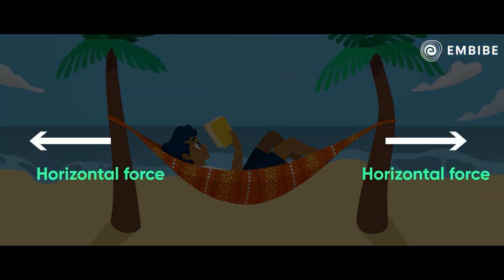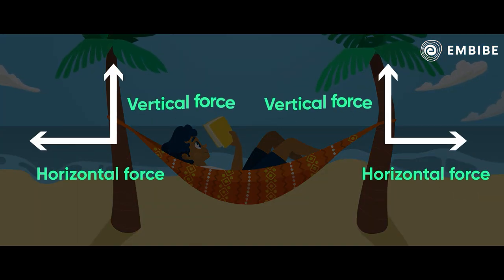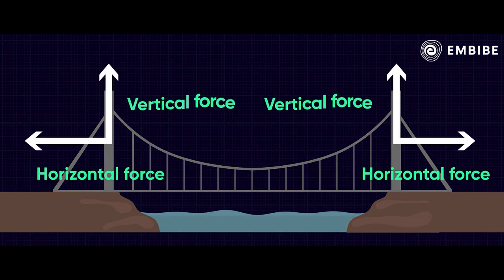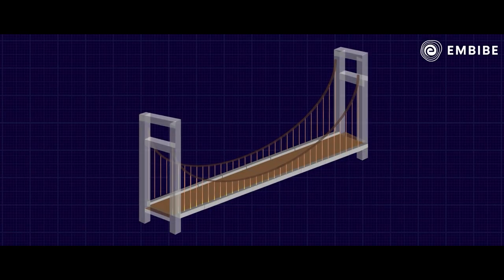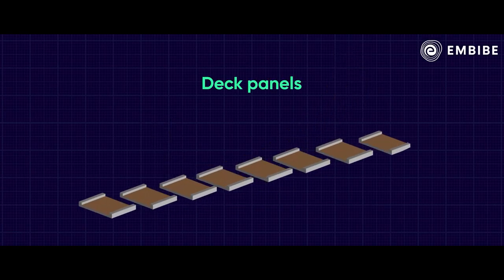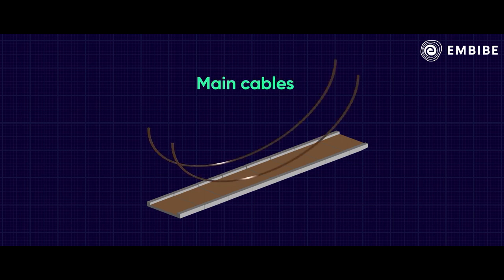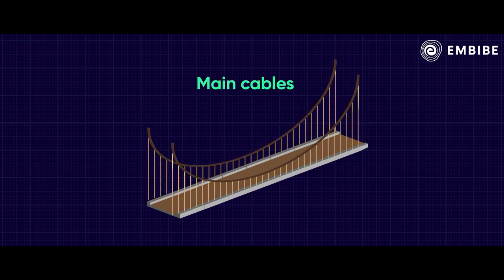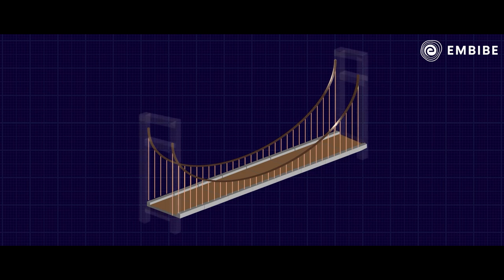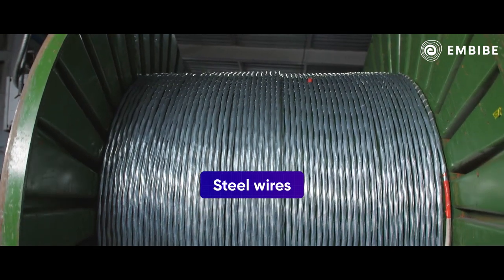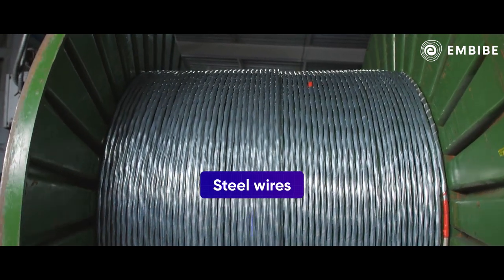One is the horizontal force and one is the vertical force. The suspension bridge also relies on both horizontal and vertical forces. The deck panels are connected to multiple sections, and those panels are connected to the main cables. The cables are anchored at both ends of the bridge to very strong support beams, and the cables are further connected to steel wires, allowing them to withstand tons of weight.